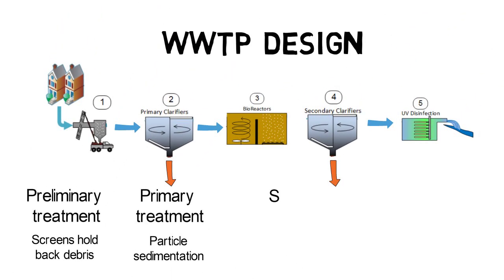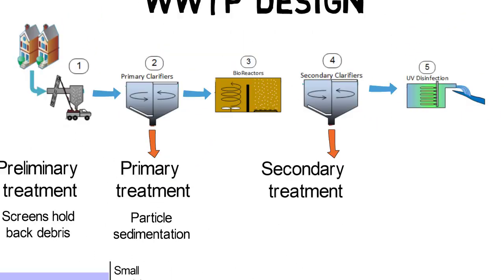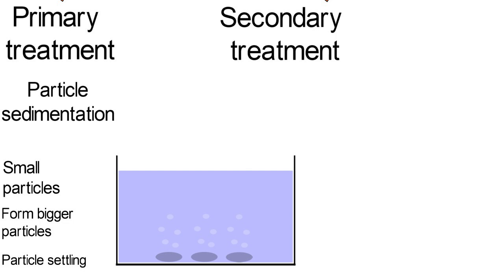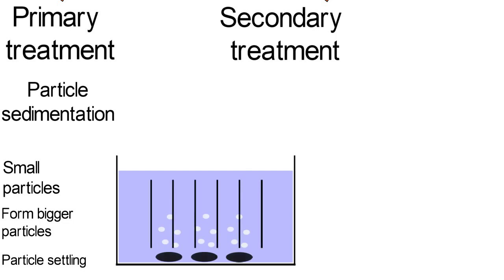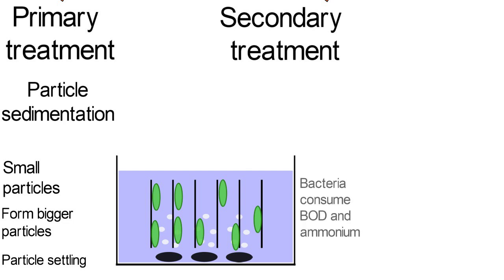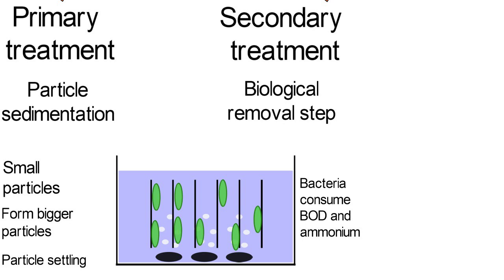Secondary treatment, also known as the biological stage, uses the presence of bacteria to consume the organic compounds, phosphorus and carbon present in the effluent. With time, they form the sludge that is treated separately.